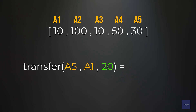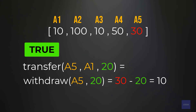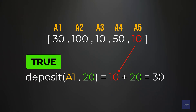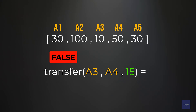Transferring $20 from account 5 to account 1 should also return true since it's a valid operation. Both account 5 and account 1 are valid accounts. To perform this operation, we withdraw the money from account 5 — $30 minus $20 equals $10 — and then deposit the money into account 1, so $10 plus $20 equals $30. Depositing $20 into account 5 is also valid, so we do $10 plus $20 equals $30. Transferring $15 from account 3 to account 4 is not valid because account 3 does not have enough money — it only has $10 — so we return false.